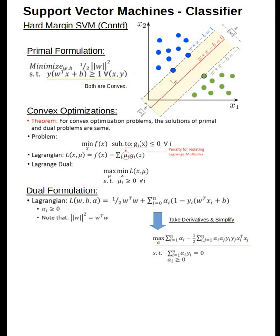We have converted it into a maximization problem, and what we get very interestingly is the function: sum of α_i minus half of summation i,j α_i α_j y_i y_j x_i^T x_j. What is interesting is we don't have w term or the b term—they got replaced with alphas when we simplified it.